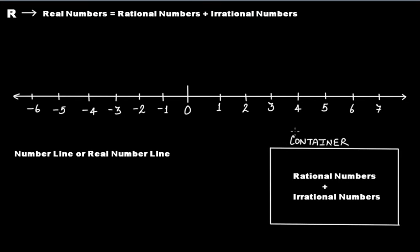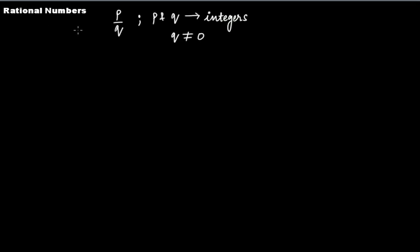Imagine you have a container. If you take all the numbers off the number line — whether rational or irrational — and put them in this container, the number line will be completely empty. That's what the real number line means. Now, we know that a rational number can be written in the form P divided by Q, where P and Q are integers and Q cannot be equal to zero — that's something we already learned in a previous grade.